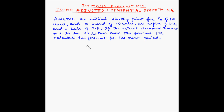Let us look at an example of trend adjusted exponential smoothing. Assume an initial starting point for Ft of 100 units — Ft is the forecast for period t — and a trend of 10 units. An alpha of 0.2, where alpha is the smoothing constant for average forecast, and a beta of 0.3, where beta is the smoothing constant for trend.